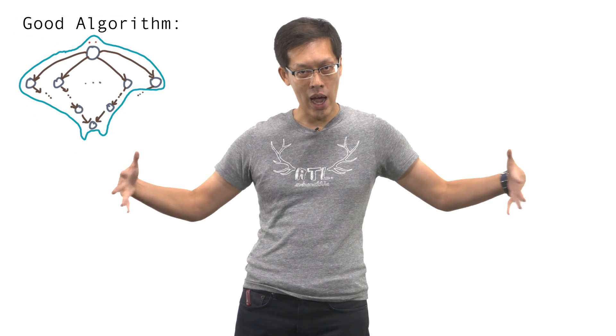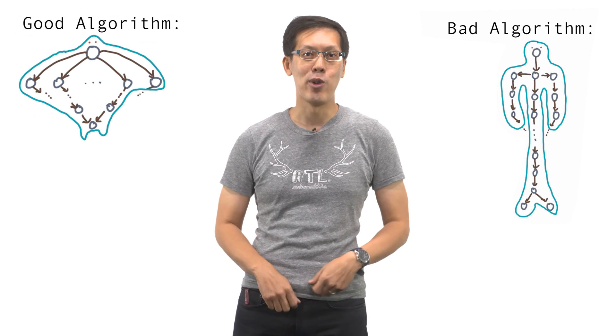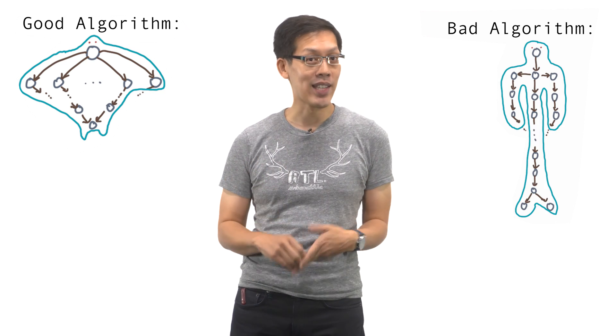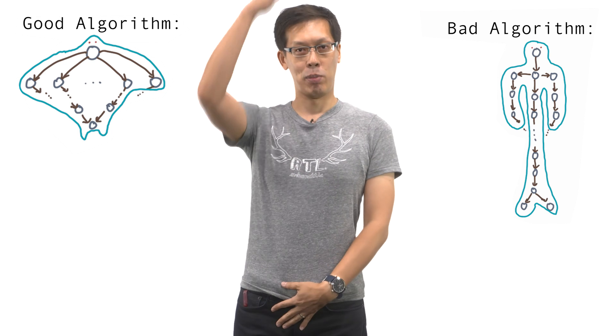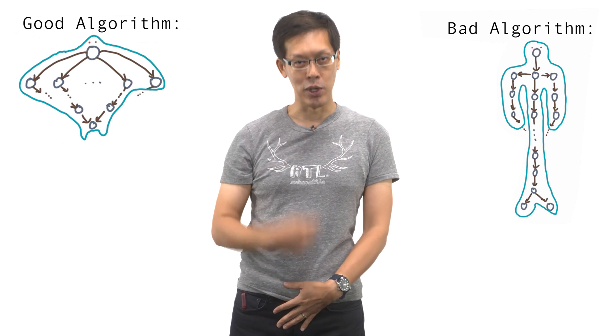Imagine that a DAG is a person where dependencies go from head to toe. A good algorithm is a person who has low mass and is short and wide, rather than being really massive, super tall, and super skinny.